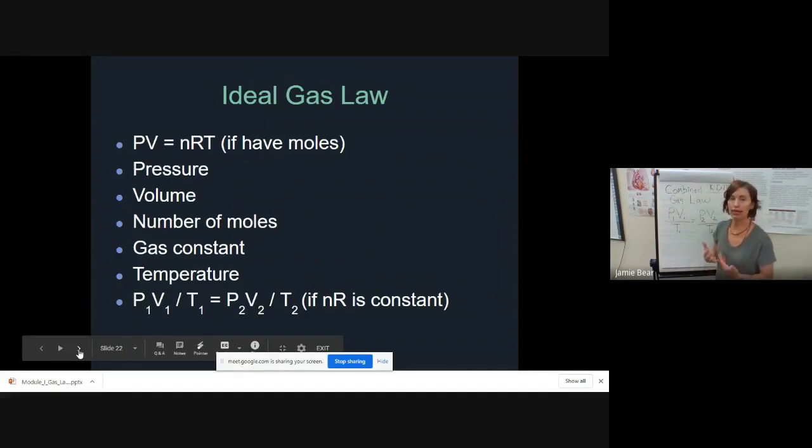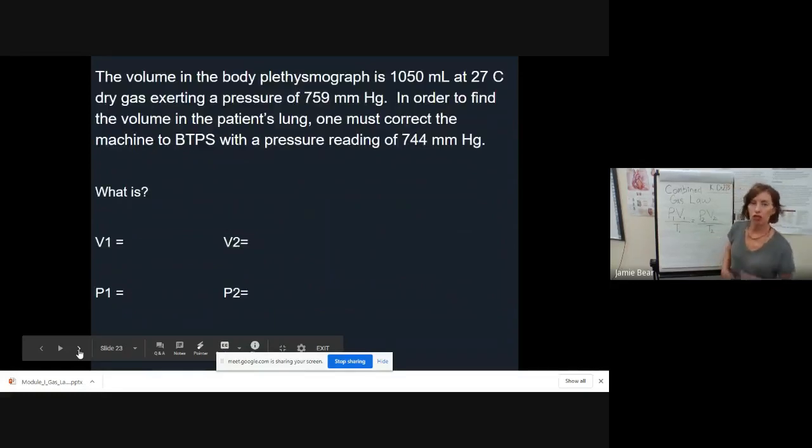We're going to use this called the combined gas law. The combined gas law, it's also called the ideal gas law but rewritten for clinical application, just says P1 V1 over T1 equals P2 V2 over T2. Now let's do an example of this.